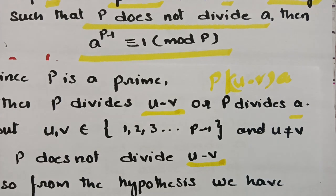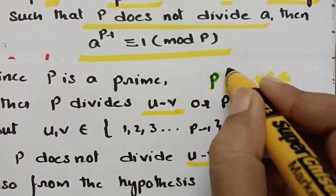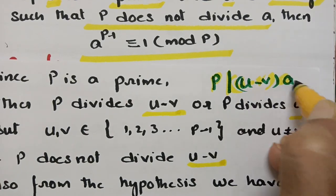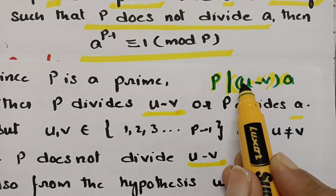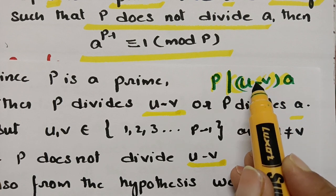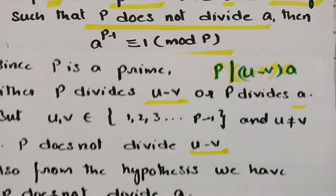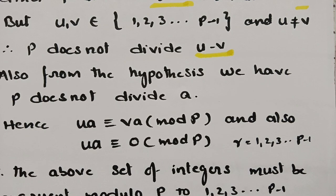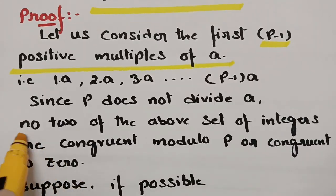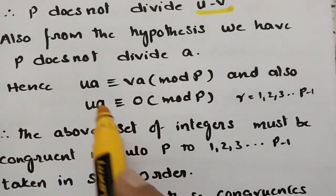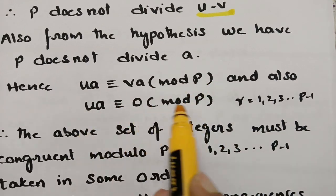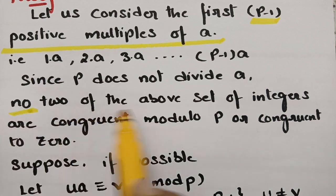Since p does not divide a (from the hypothesis) and u, v are both less than p, their difference is also less than p, so p does not divide (u − v) either. There is no possibility at all. Therefore, our assumption holds: no two of the above set of integers are congruent modulo p or congruent to 0.